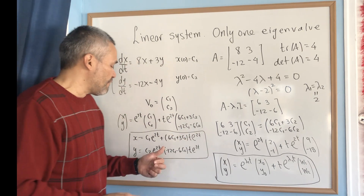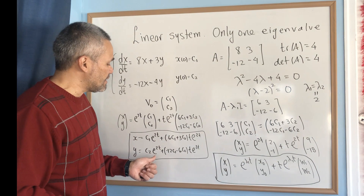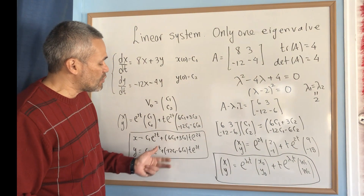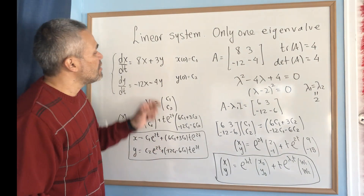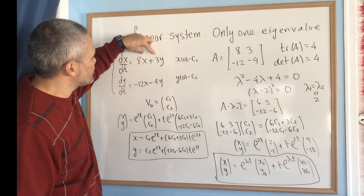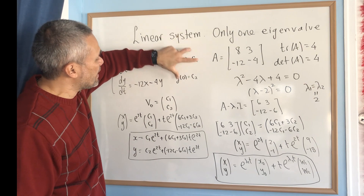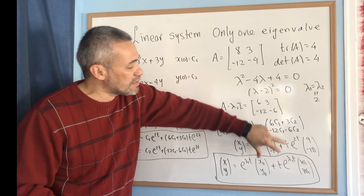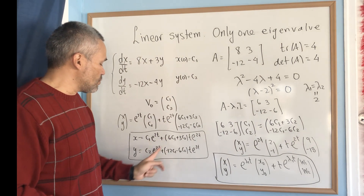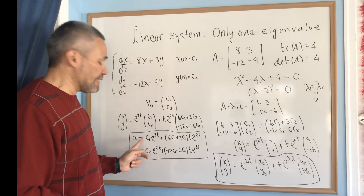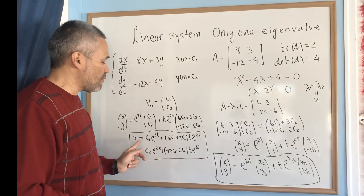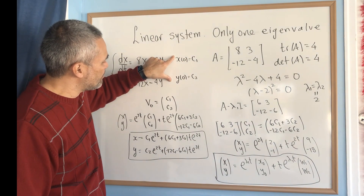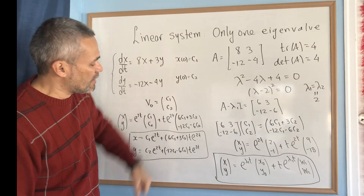Notice the key difference from other cases: here you write c₁ and c₂ at the beginning rather than at the end. You just keep track of them throughout the procedure, and c₁ and c₂ appear naturally in the answer — you don't add them at the end. You write them down at the beginning and they will appear naturally.